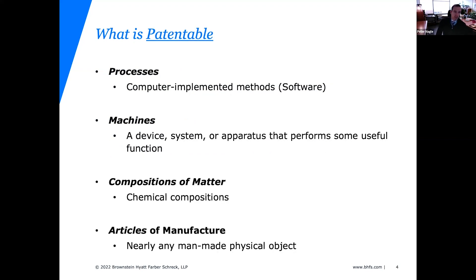Moving on to what is patentable — the saying is that anything under the sun made by man is patentable, though that's not particularly useful. Probably the most important category for this audience is processes — you can patent a process, which can be a method of doing something, a method of making something, or computer-implemented methods. This is where you can patent software. There are some current trends in the law with respect to the patentability of software, which we'll touch on briefly.